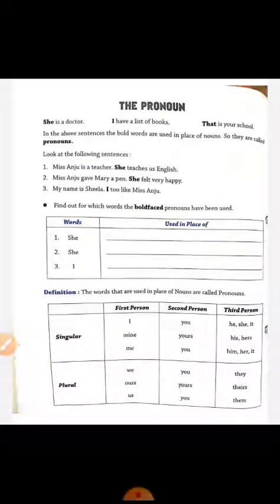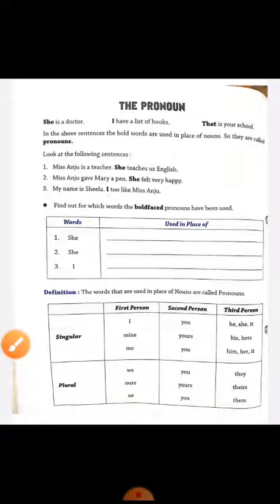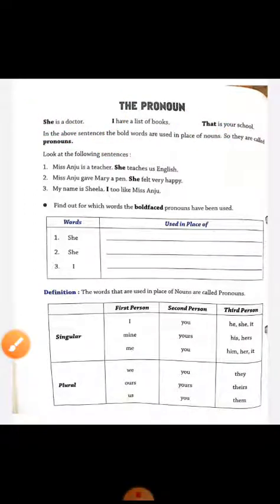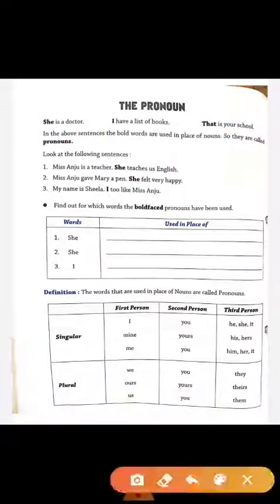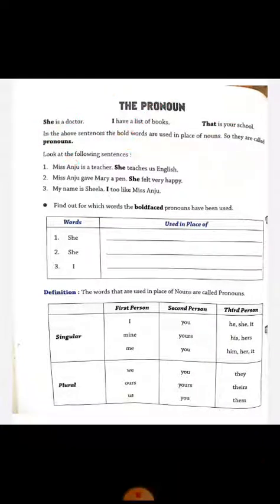So let's see what a pronoun is. Here are some examples. We will read them first. She is a doctor. I have a list of books. That is your school. In these three sentences, we have not written a proper name. We have some words used in place of a name, like she, I, and that. The words which are used in the place of nouns are called pronouns. So she, I, and that are pronouns.